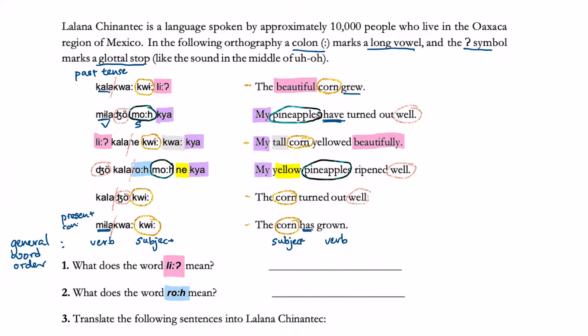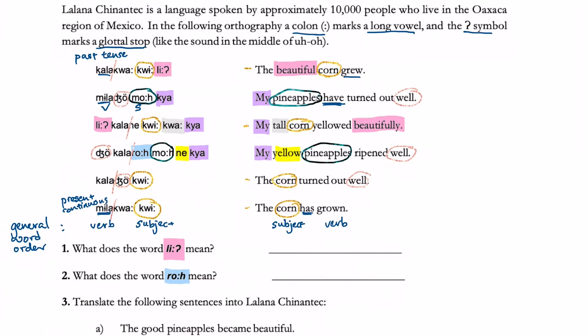Knowing the English translation of the unknown part of the phrase, knowing the tenses, and knowing the word order, we can begin to solve the problems below. These are the key points that you need to know before solving this question. Now keep watching to see how I approach this question.